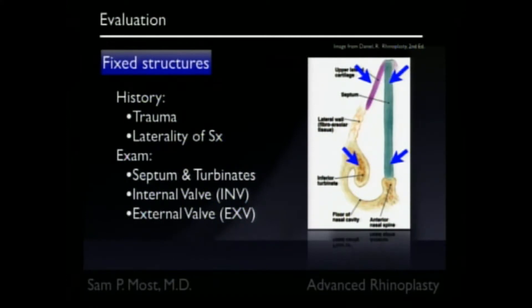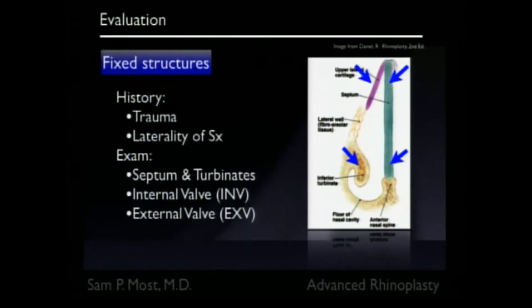When we talk to patients, we ask about a history of trauma — though sometimes there's no history of trauma and things can just be bent out of shape anyway. The laterality of symptoms — whether one side is constantly obstructed and doesn't change — is a sign that it's not something variable. We look inside the nose at the septum, the turbinates, and the internal and external valve.